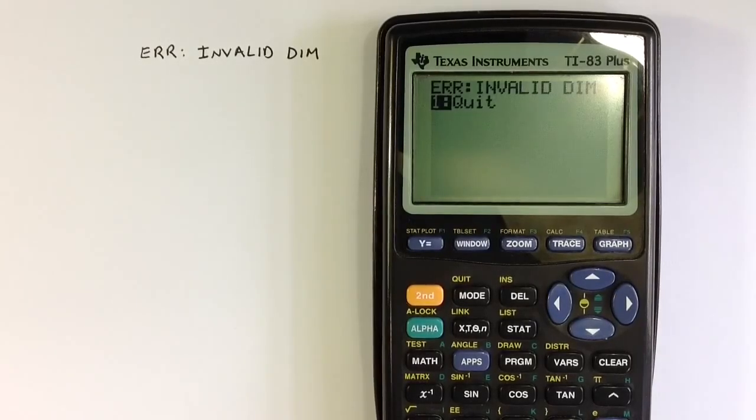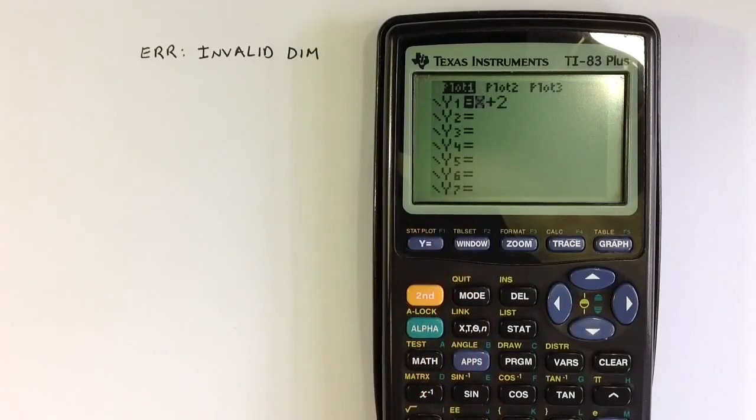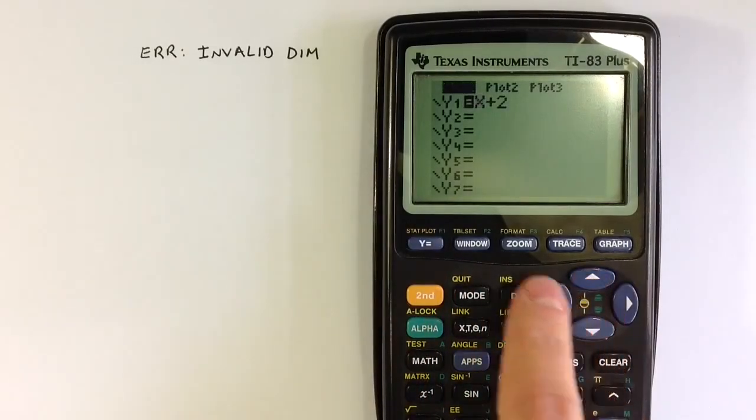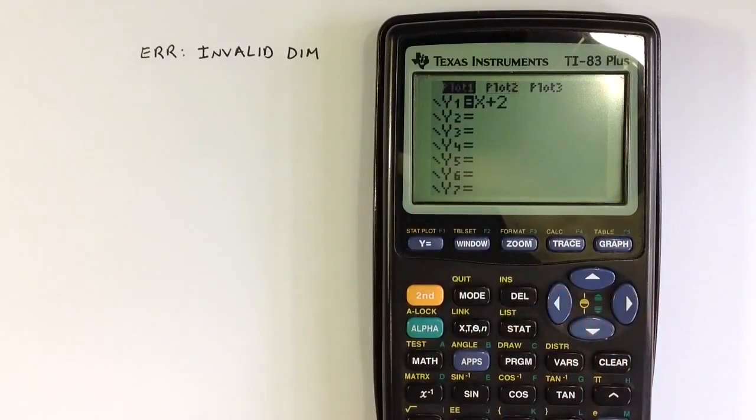So to turn it off, we hit enter to get rid of the error message, go back to the y equals menu and use the arrow keys to go over that highlighted plot 1. The fact that it's highlighted means that it's turned on.